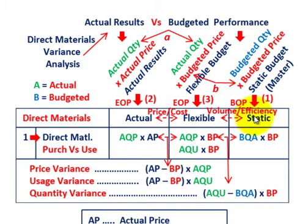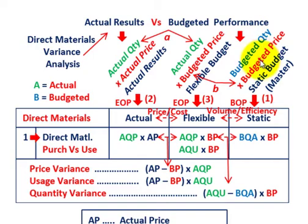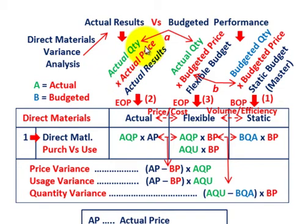Our static or master budget — the standard amount we allow — is established at the beginning of the period. It's simply a budgeted quantity times a budgeted price for our direct materials. Then at the end of the period, we know our actual quantities and actual prices on our direct materials, and that gives us our actual results.